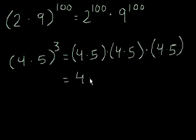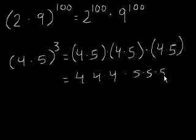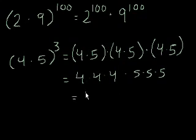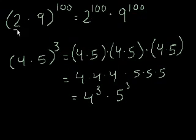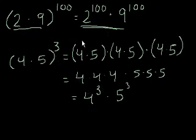Which is the same thing as 4 times 4 times 4 times 5 times 5 times 5 — I just switched the order of multiplication, which you can do. Well, 4 times 4 times 4 is just 4 to the third, and 5 times 5 times 5 is 5 to the third. That gives you a good intuition of why this property is true. When I first learned exponent rules, I would always do this proof myself just to make sure I was doing it right. A proof is just an explanation of why the rule works.